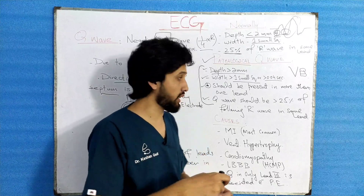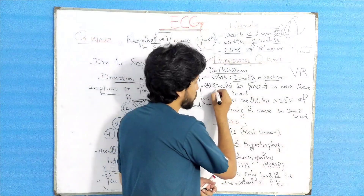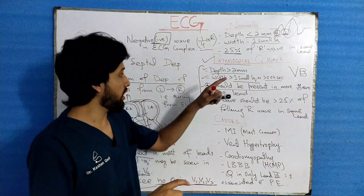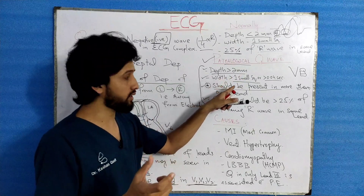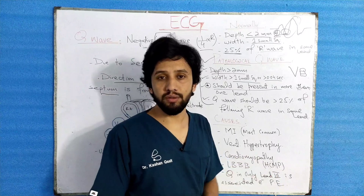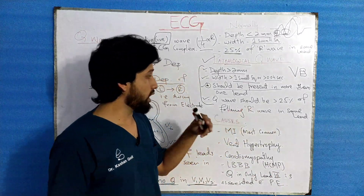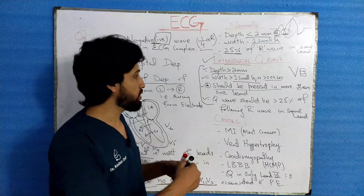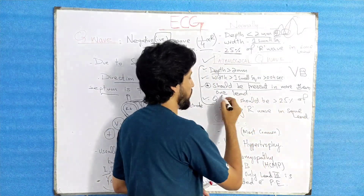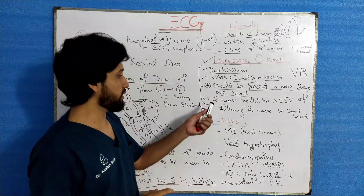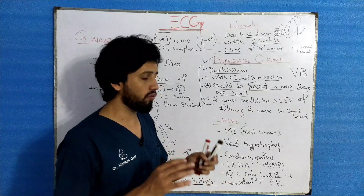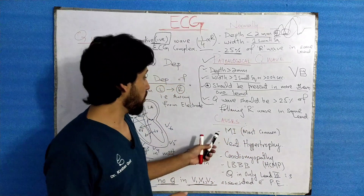The third criterion: the pathological Q wave should be present in more than one lead. If the Q wave is greater than 2 mm and its width is greater than one small square box in only one lead, you cannot call it pathological. It must meet these criteria in more than one lead. The last criterion: the Q wave should be greater than 25% of the following R wave of the same lead.